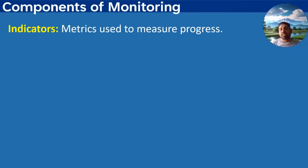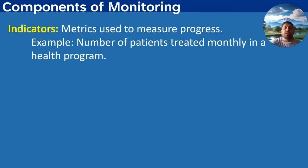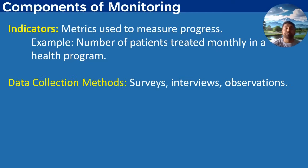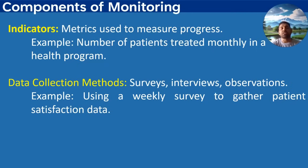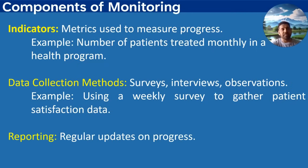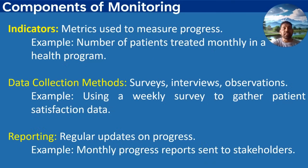The key components of monitoring include: indicators — metrics used to measure progress, for example the number of patients treated monthly in a health program; data collection methods such as surveys, interviews, observations, or routine data collection, for example a weekly survey to gather satisfaction data; and reporting — regularly updated progress reports, for example monthly progress reports sent to stakeholders.